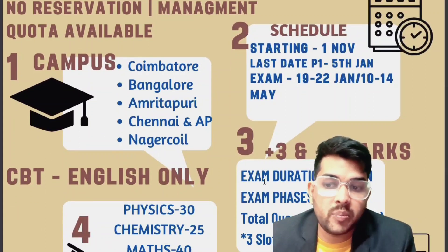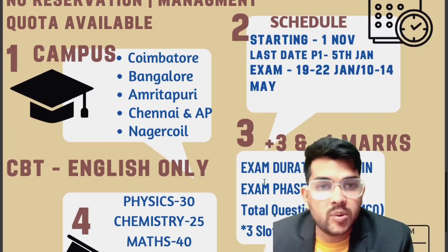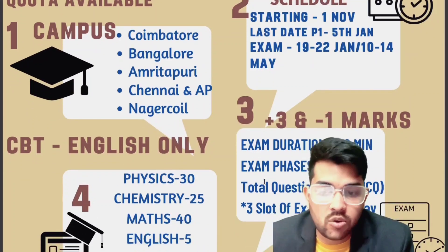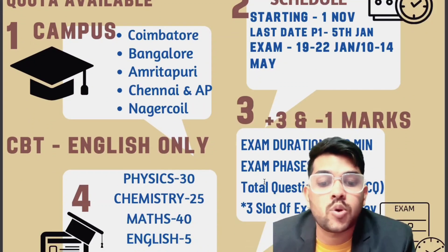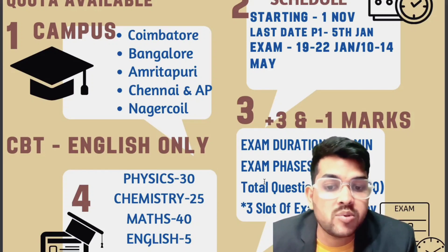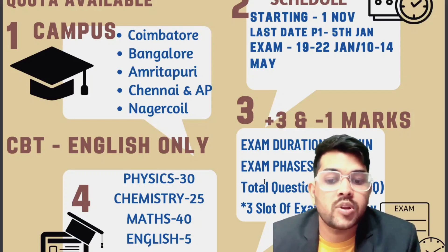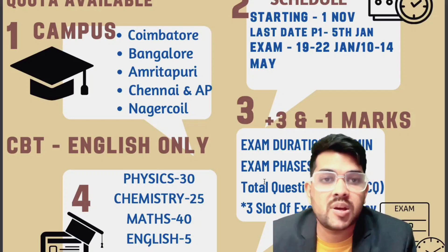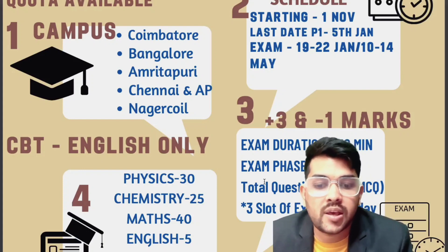Regarding the exam pattern: it will be a Computer Based Test and the medium will be English only. There will be 30 questions in Physics, 25 in Chemistry, 40 in Math, and 5 in English - totaling 100 questions. Compared to last year's 125 questions, this year there are only 100 questions, which is good news - you will have the same time but fewer questions, so you can score more marks.